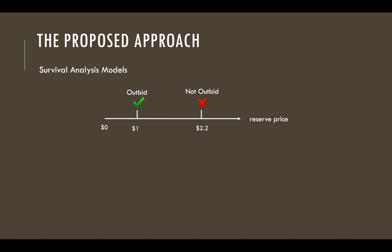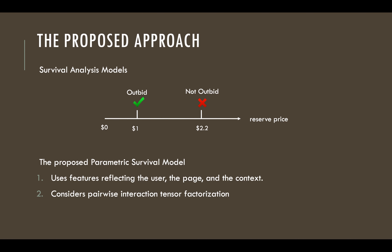Since our data are censored, it is natural to use survival analysis models. In this paper, we propose a parametric survival model. To deal with the challenge of limited user profile information, we use latent vectors to model user-page pairs and add factorized pairwise interaction between users and pages in the objective function.